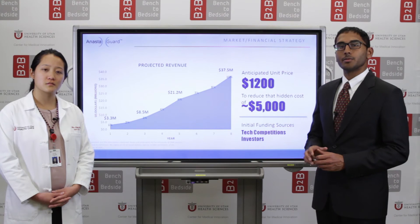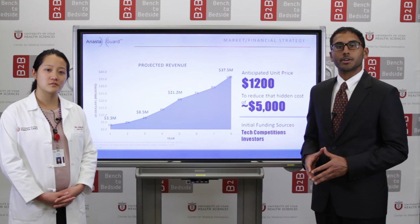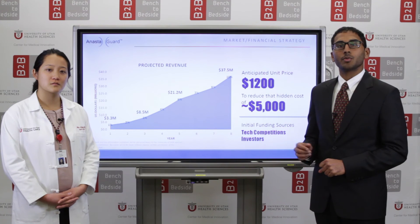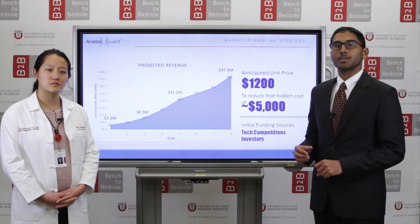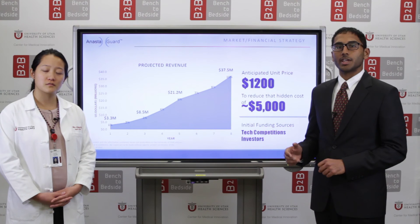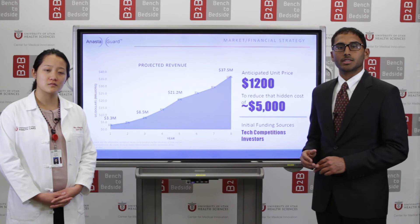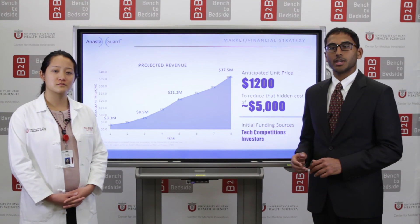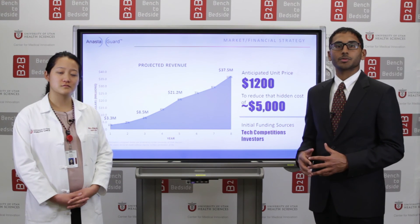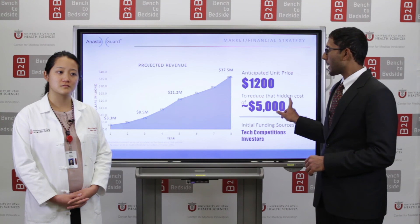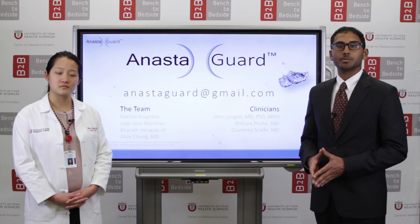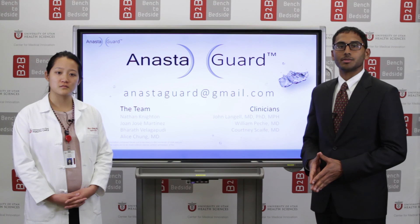With that in mind, we anticipate a unit price of $1,200, and by year 5 our projected revenue will be $21 million, and by year 8 it will be approximately $38 million. Furthermore, we are currently in the process of obtaining funding through technology competitions as well as ventures, and will allocate this funding towards preclinical studies. Thank you for your time and if you have any questions, please contact us at anastoguard.gmail.com.